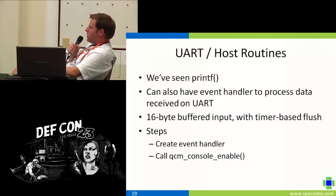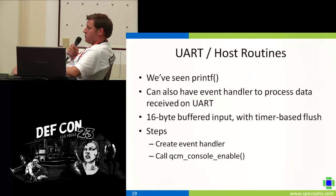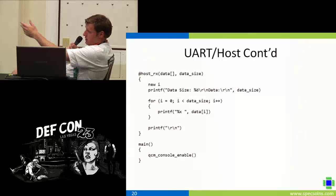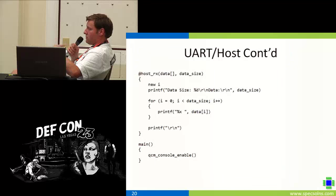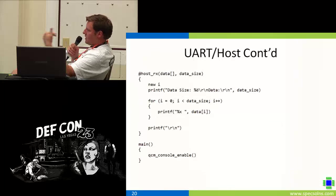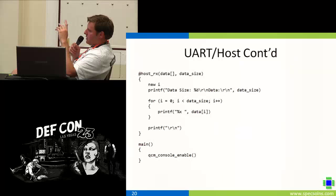When we talk about UART that the script can do: we've already seen printf for output. But there's also an event handler to process data received on UART — it is buffered. You define in your script the at-host-RX event handler. The native stuff will see that and direct anything received on UART to it. In main, we enable the console. The routine receives the data array and data size — up to 16 bytes — and all this does is print out what was received in hexadecimal format.